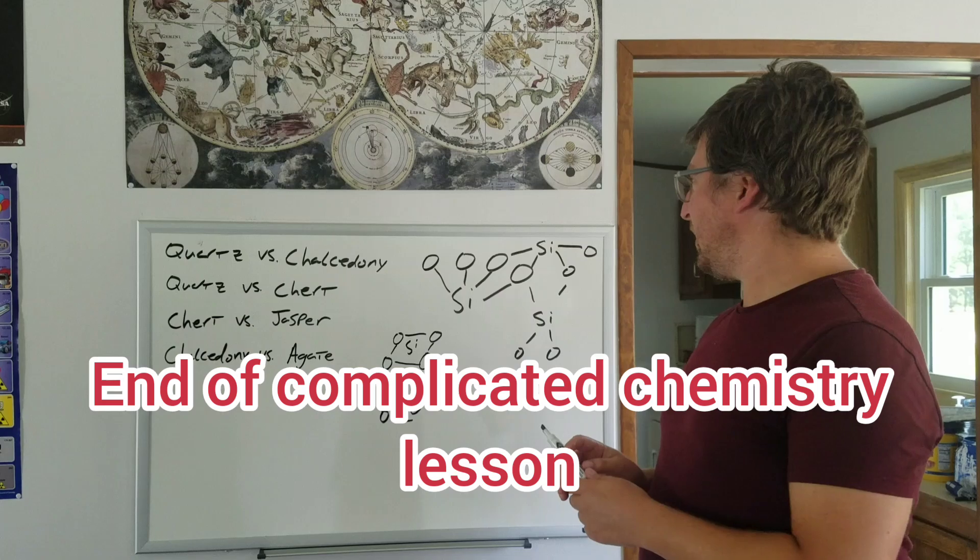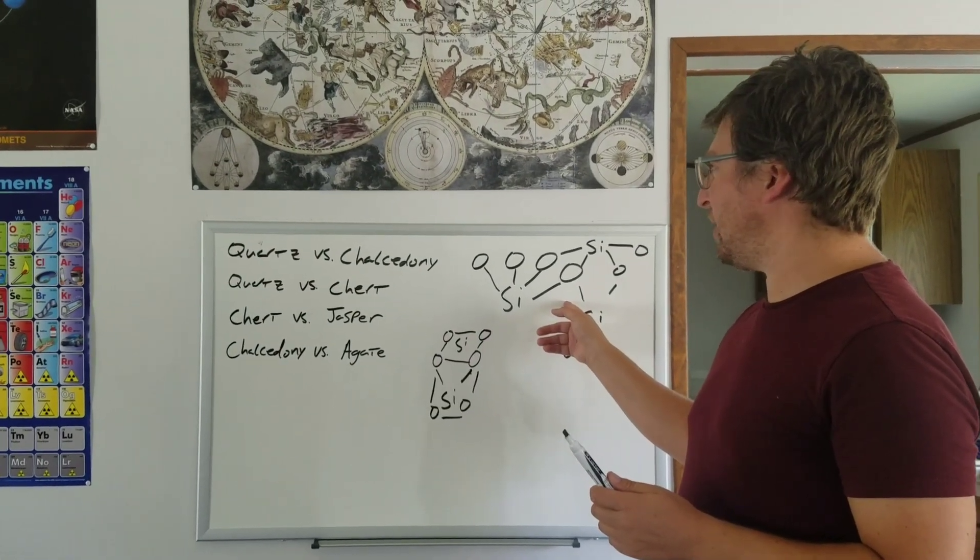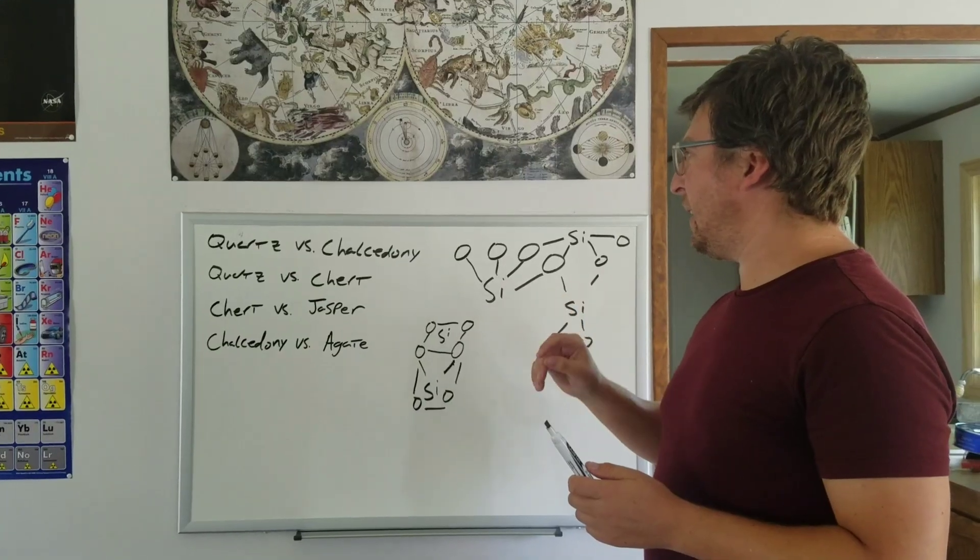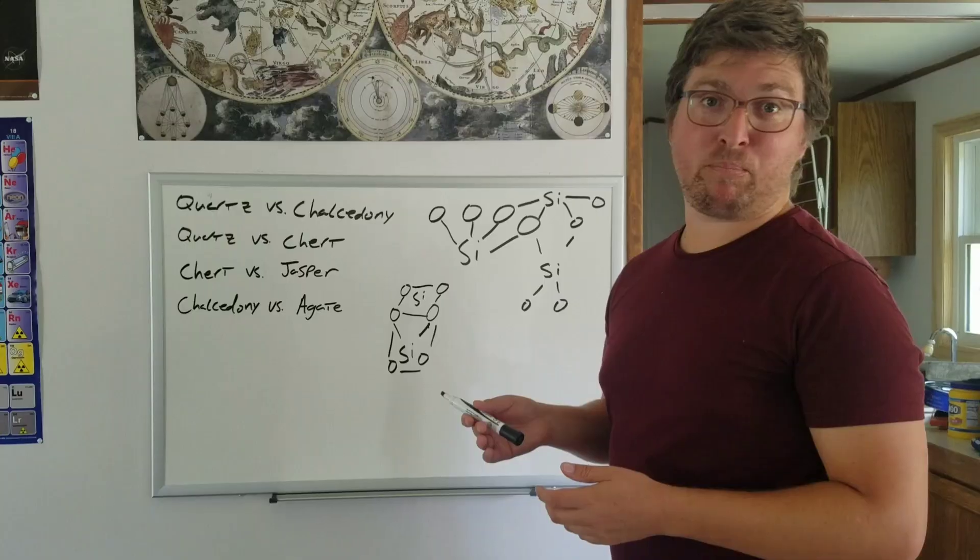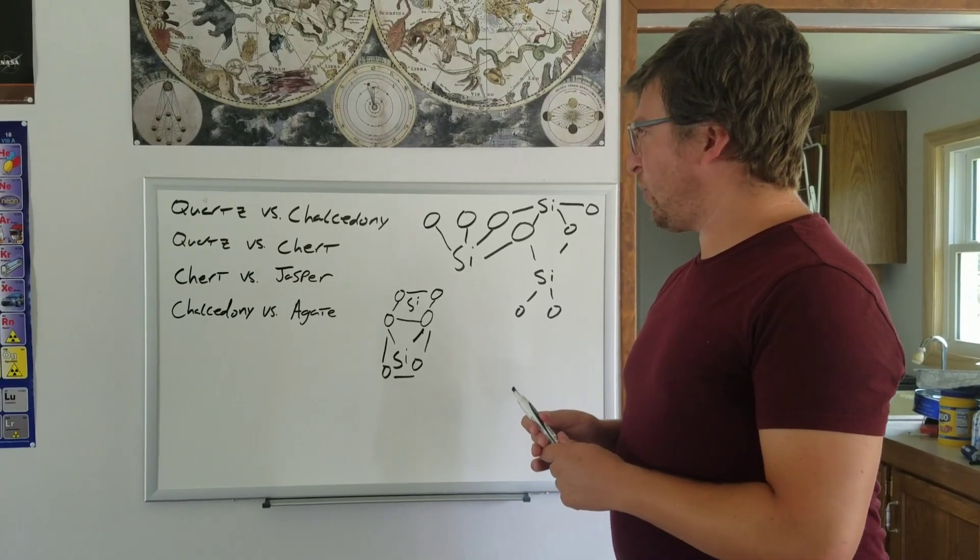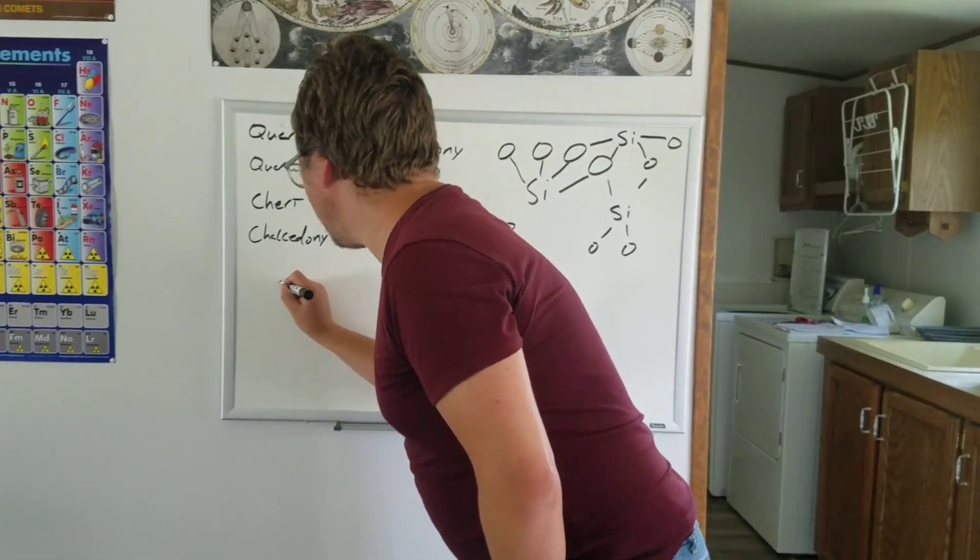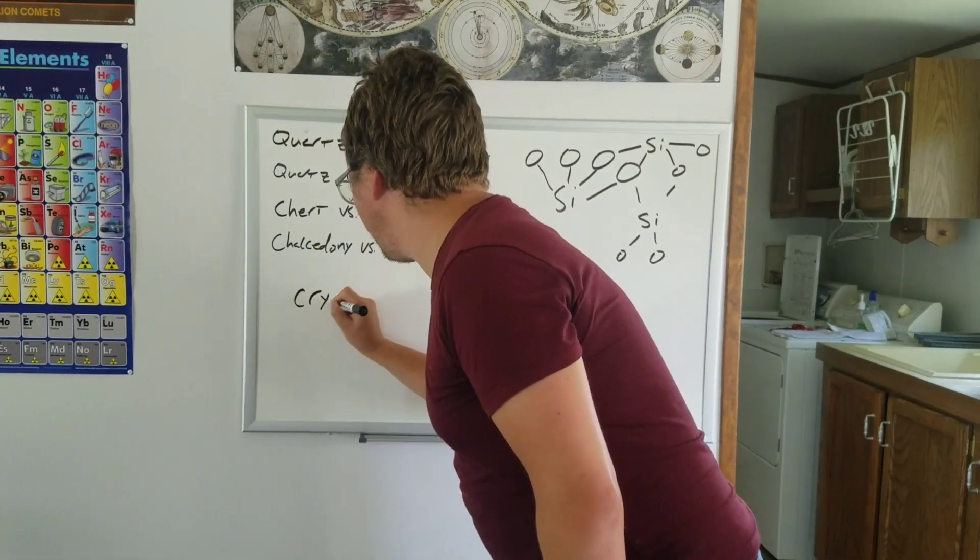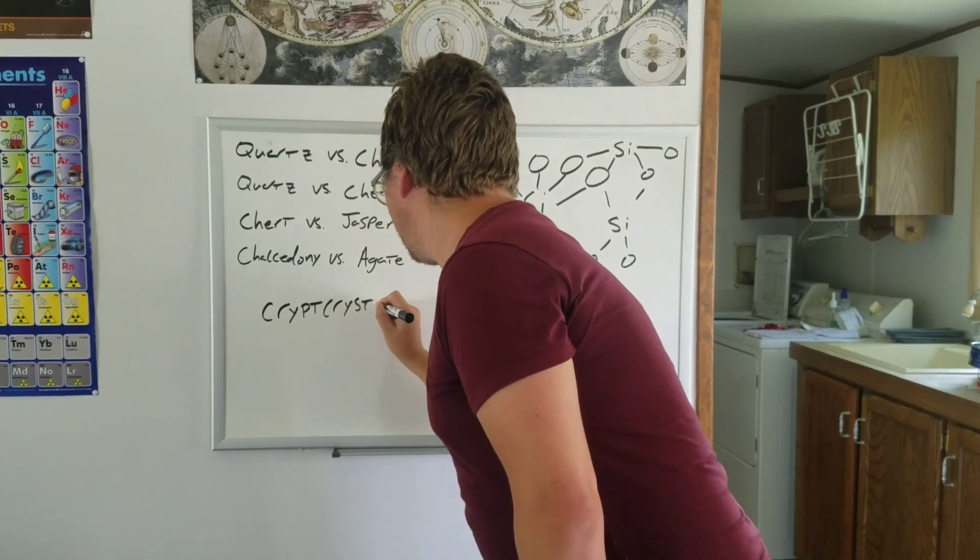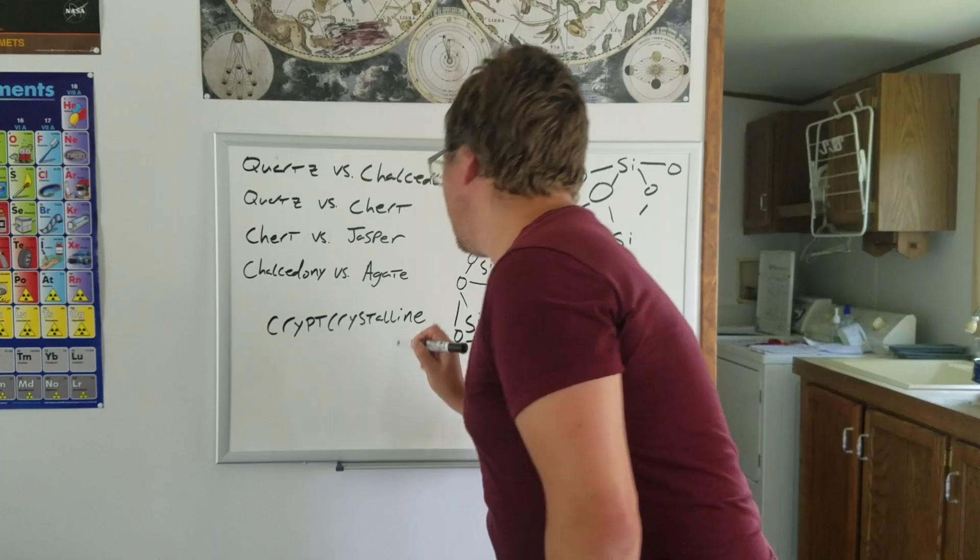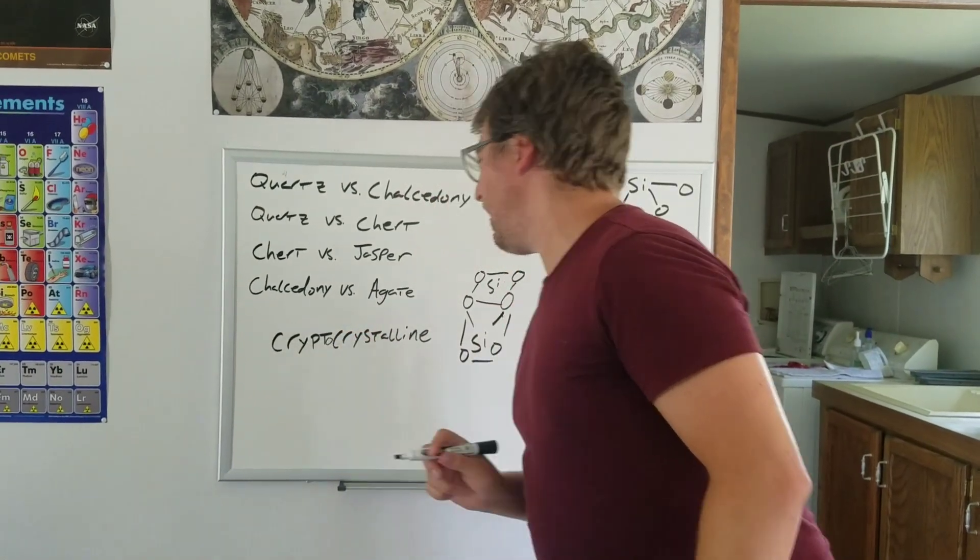So quartz is quartz. So it's the structure similar to this. And chalcedony or chalcedony, you can pronounce it either way. I tend to pronounce it both ways. It is what we call cryptocrystalline. And I'll write that word down because it's the nice big one. It's a five dollar word here. Cryptocrystalline.